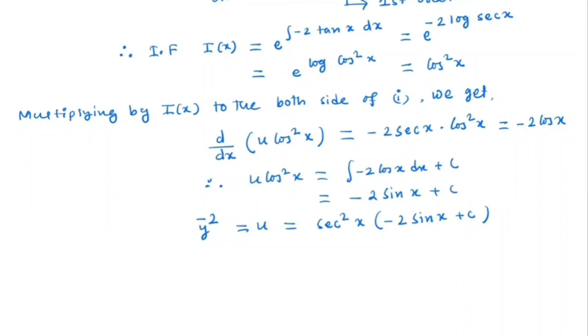And u is y to the power minus 2, so the general solution is given by y to the power minus 2 is equal to cos^2 x times (minus 2 sin x plus c).